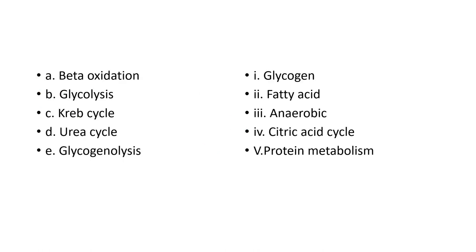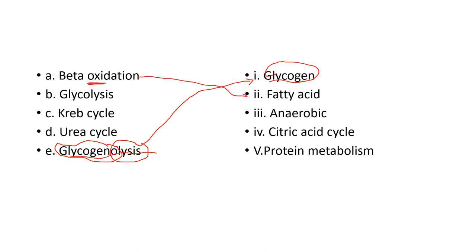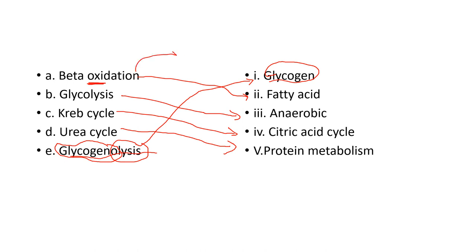Glycogenolysis is the breakdown of glycogen in the liver to form glucose. Beta-oxidation is associated with fatty acids. The urea cycle is associated with protein metabolism. The Krebs cycle is the citric acid cycle. Glycolysis can occur through both aerobic and anaerobic pathways. These are basic biology concepts you need to review.